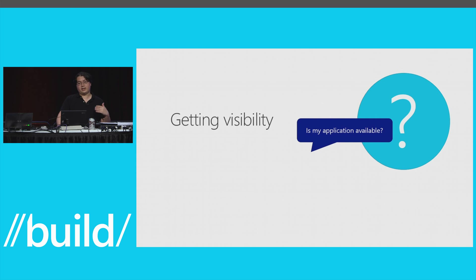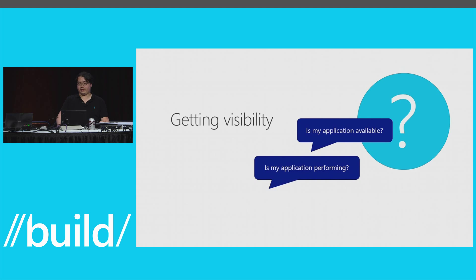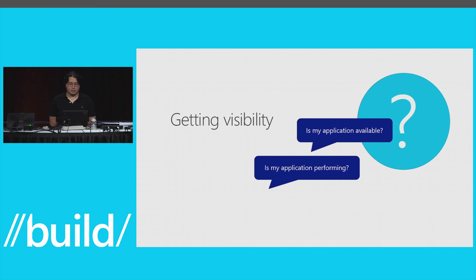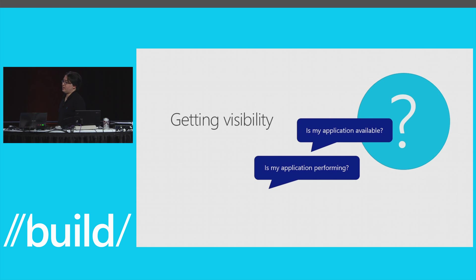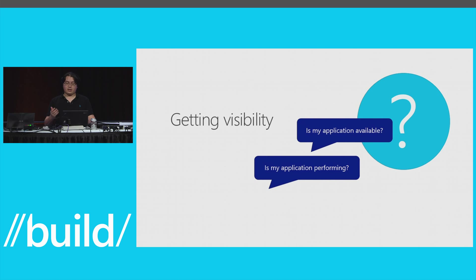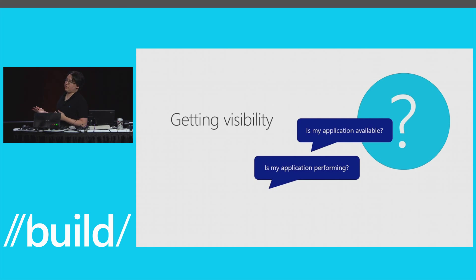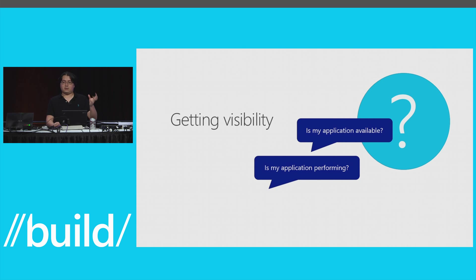The second question is: even if my application is available, is it performing? Is it responding quickly to customer requests? When customers click buttons, are they getting acceptable response times? Is a flood of traffic from Reddit pegging all the CPUs at 100%? And even if the app is performing well and available, it may be generating a lot of errors — customers seeing exceptions or missing pages shown to the customer.